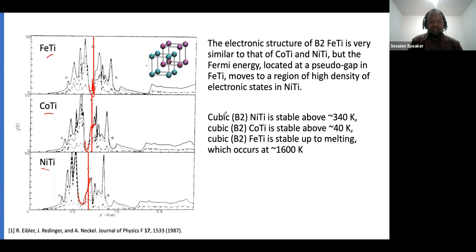The cubic structure for nickel titanium, cobalt, and iron: nickel titanium is stable above 340 Kelvin, cobalt above 40 Kelvin, while iron titanium is stable up to melting at about 1600 Kelvin, which is higher and makes this material have very good applications and become more interesting at these high temperatures.